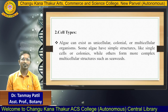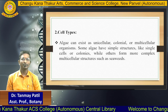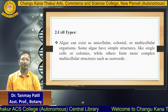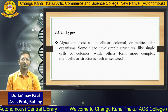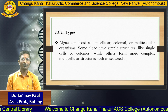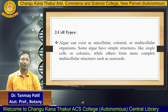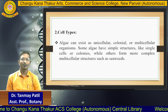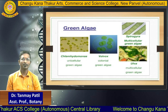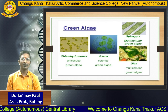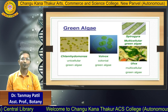The next characteristic is cell type. Algae can exist as unicellular, colonial or multicellular organisms. Some algae have simple structures like single cells or colonies, while other forms have more complex multicellular structures such as seaweed. Here is the image showing unicellular algae as well as multicellular algae in colonial form.